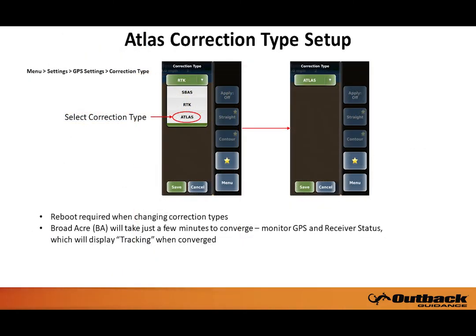To switch the correction type on your Rebel to Atlas, simply touch Menu, Settings, GPS Settings, Correction Type, and touch the down arrow, then select Atlas. Note that a reboot of the Rebel will be required when changing correction types.